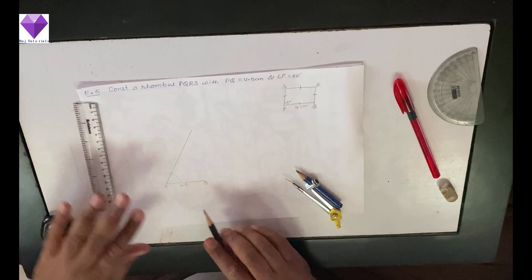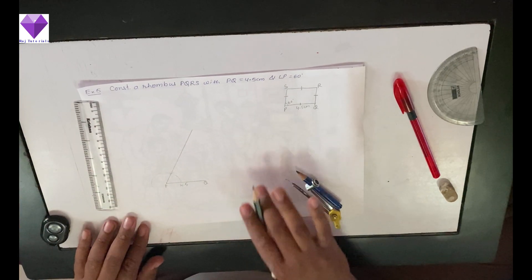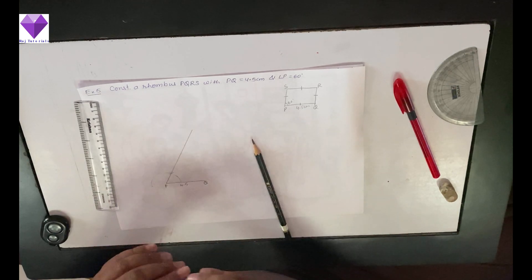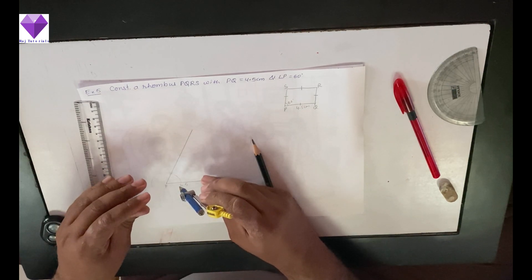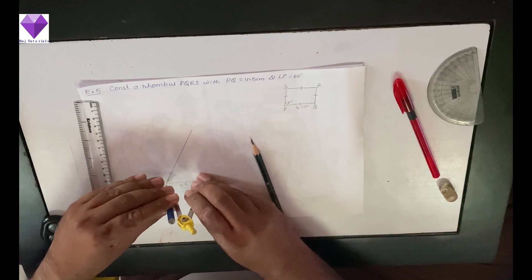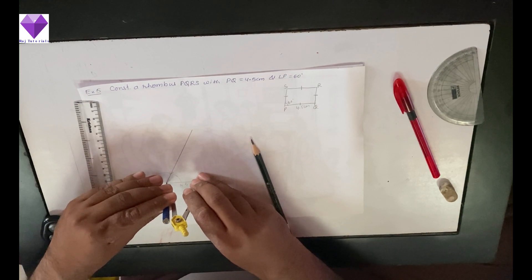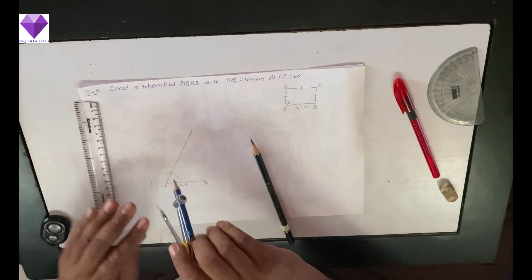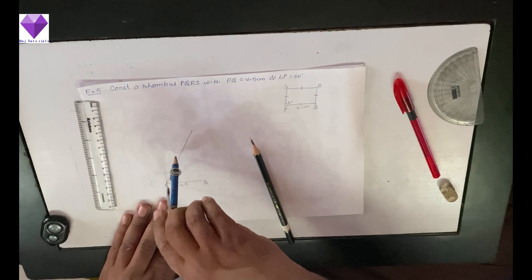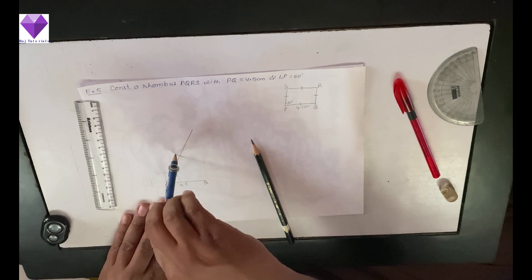Now on this line from P, I have to cut a 4.5 centimeter arc. So I will measure PQ again, and with P as center, I will mark one arc here. So this is my S point.